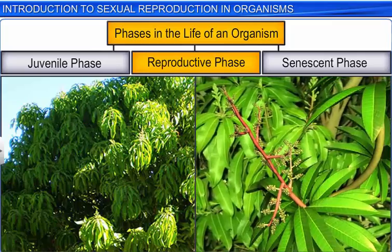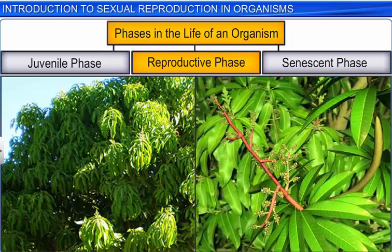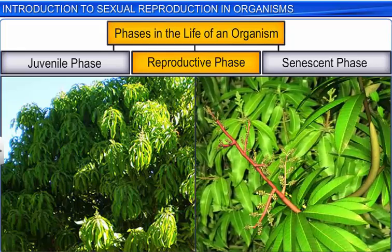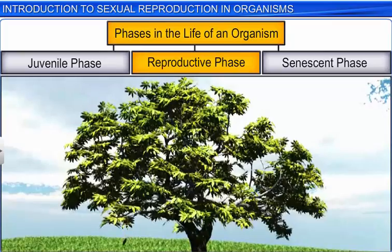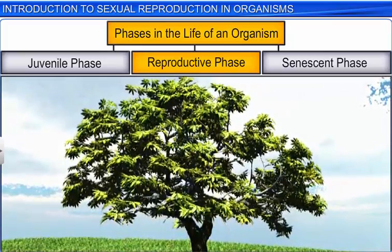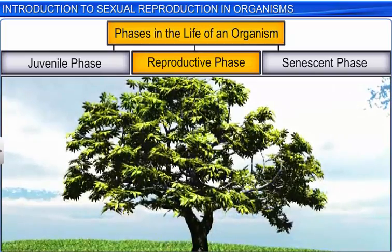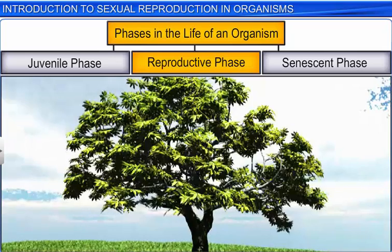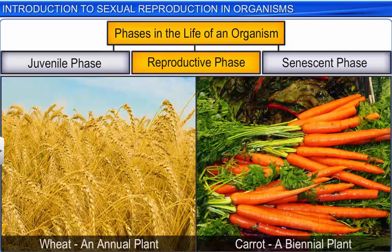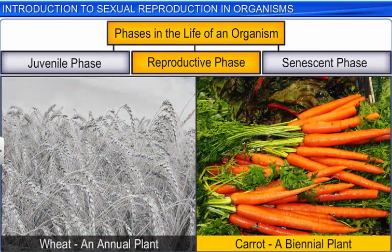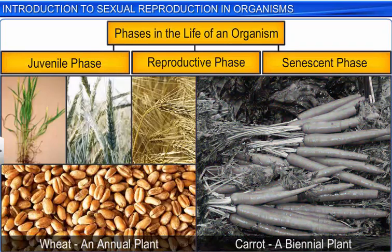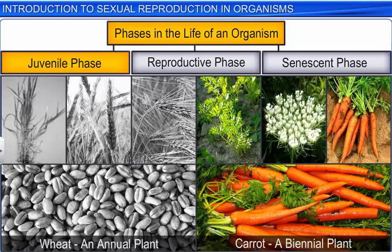In the case of mango, which is a perennial plant, it is very difficult to define the various phases of life. That's because perennials, which have a long reproductive phase, keep shedding their leaves throughout the year or once a year in winter, which can be misinterpreted as a sign of the senescent phase. However, it is easy to identify the phases in annuals and biannuals. All three phases of an annual plant occur in one year, whereas biannuals have a two-year life cycle, entering the vegetative phase in the first year and the reproductive followed by the senescent phase in the second year.